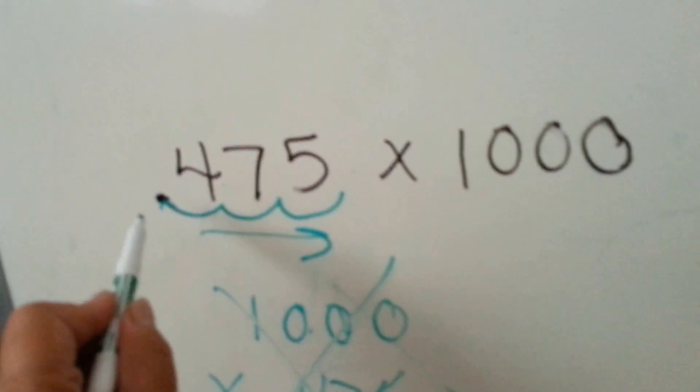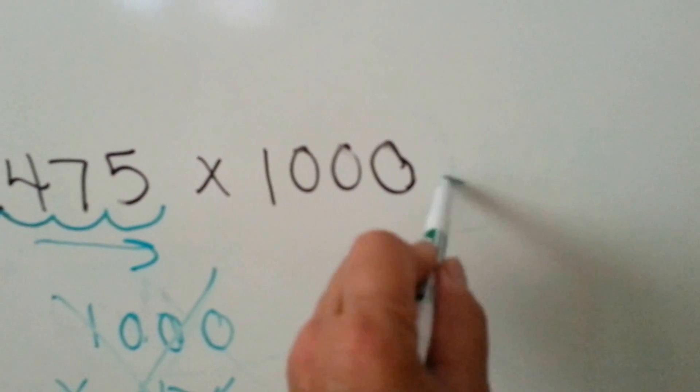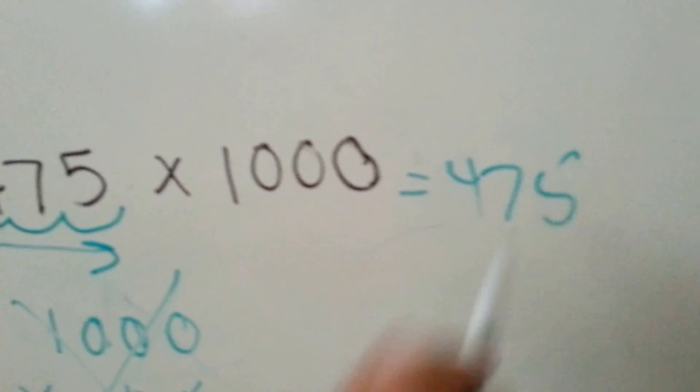Three times, one, two, three. 0.475 times a thousand becomes four hundred and seventy-five. Wasn't that easy?